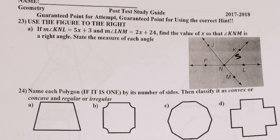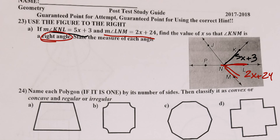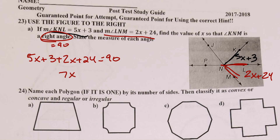Number 23 says use the figure to the right. We did a figure very similar to this — it might have been the same exact one. So you put 5x + 3 for angle KNL, and 2x + 24 for angle LNM. They want it to be a right angle, which means it's equal to 90. So: 5x + 3 + 2x + 24 = 90, giving 7x + 27 = 90, then 7x = 63, divide by 7, x = 9.